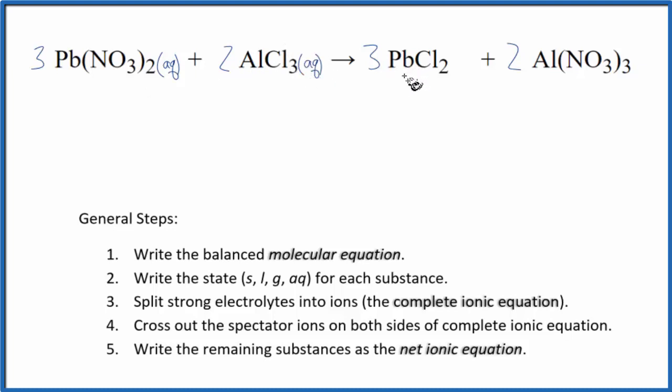But this PbCl2, when you see lead compounds, normally we think of chlorides as very soluble. But with lead compounds, we often have insoluble compounds. In this case, lead 2 chloride is considered to be slightly soluble. And for net ionic equations, we consider that a solid. So this will be a precipitate. It'll fall to the bottom of the test tube.